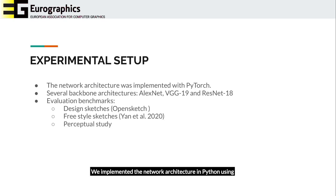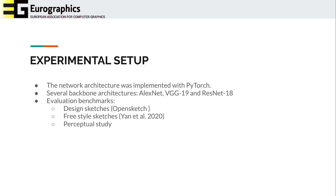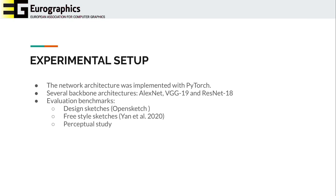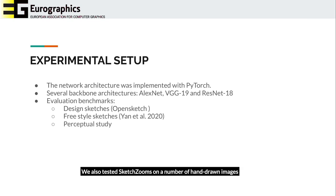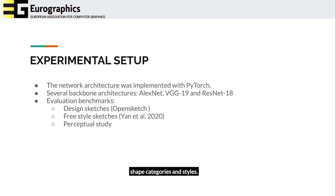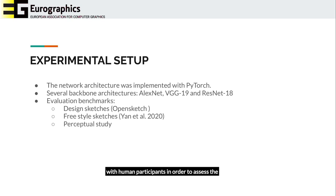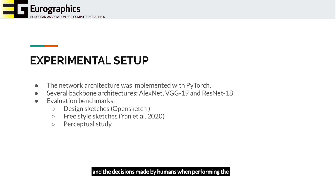We implemented the network architecture in Python using the PyTorch framework and initialized it using ImageNet's pre-trained weights. We trained three different state-of-the-art backbone architectures: AlexNet, VGG19, and ResNet18. We also tested SketchZooms on a number of hand-drawn images from the OpenSketch dataset to assess the generalization power of the network to unseen shape categories and styles. In addition, we conducted a perceptual study with human participants in order to assess the relationship between the semantics captured by our descriptors from synthetic data and the decisions made by humans when performing the same matching task on artificial sketches.